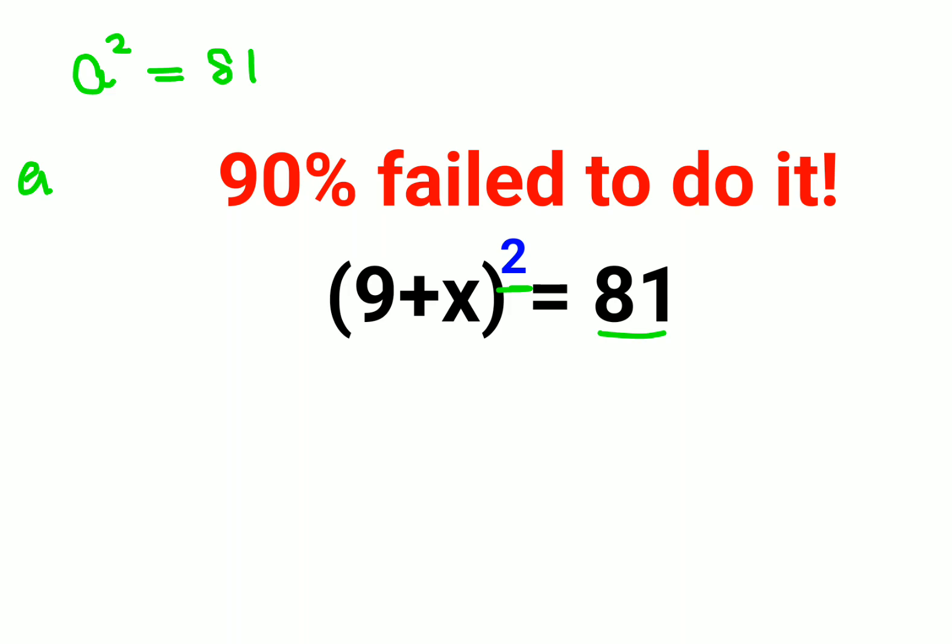When you want to find the value of a, you will take square roots on both sides. And when you take square root of a perfect square, here the answer will be in the form of plus minus 9.